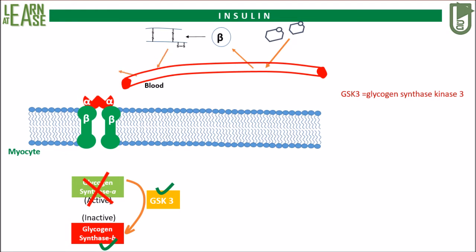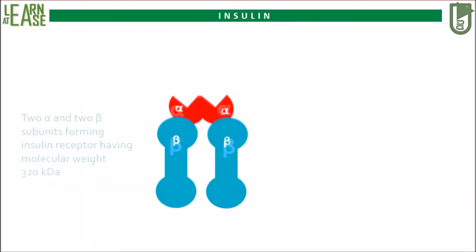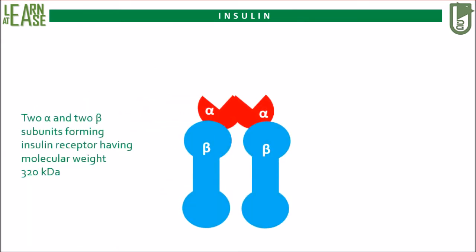Insulin will travel in the blood and bind to its receptor on the target cell, specifically to the alpha subunit of the insulin receptor, causing its activation. The insulin receptor contains two alpha and two beta subunits, constituting a total molecular weight of 320 kiloDaltons. The beta subunit possesses several tyrosine residues. When insulin binds, the alpha subunits drive a conformational change in the beta subunits, causing autophosphorylation of tyrosine residues in the beta subunit.